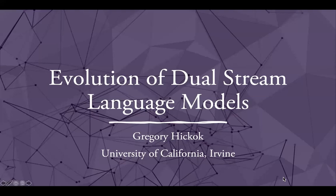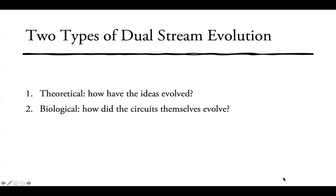The evolution of dual stream language models. There are two types of evolution we could be talking about: one is theoretical — how have the ideas evolved — and the other is biological — how did the circuits themselves evolve. We'll talk mostly about the first one, but we'll use the second one towards the end.